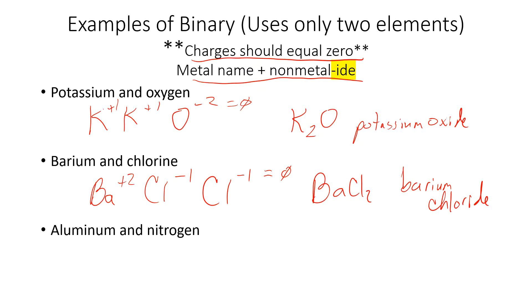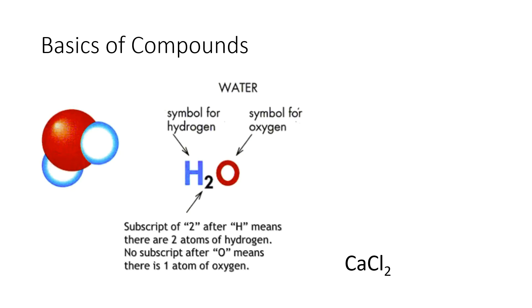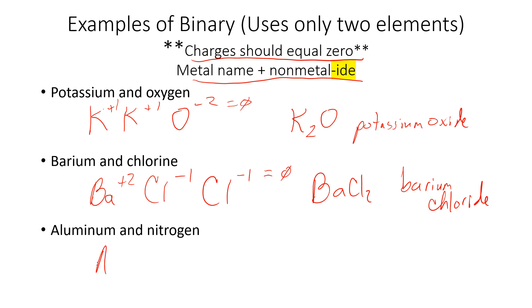All right, aluminum plus nitrogen. Aluminum is here with the plus three, and nitrogen is here with the minus three. So Al plus three, and N minus three - three minus three equals zero, so we're good. So it's just AlN, and we would call that aluminum, just the name of the metal, and aluminum nitride.